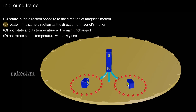The correct option is to rotate in the same direction as the direction of the magnet's motion. As there is induced current, there will also be a rise in temperature. Option D is wrong because it states the disc will not rotate.